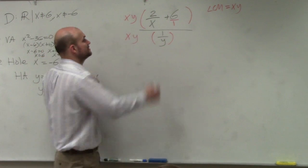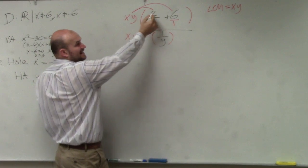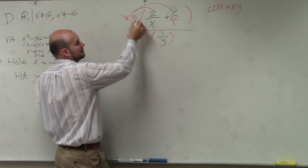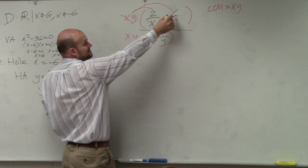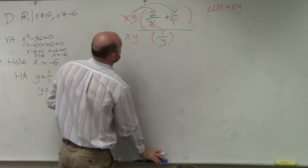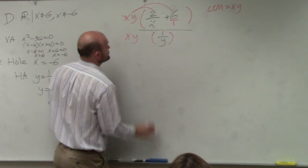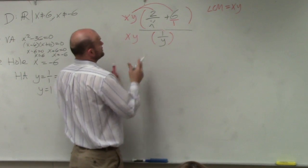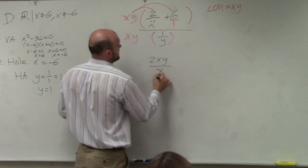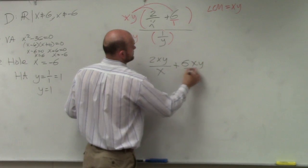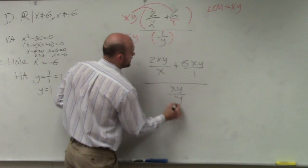But watch what happens. You have to apply a distributed property here. So what's xy times 2 over x? The x's divide out, right? What's xy times 6? Well, actually, let me—I don't want to confuse you. Let's do it. Let's actually distribute this. So by doing distributed property, I get 2xy divided by x plus 6xy divided by 1 all over xy divided by y. You guys see how I did distributed property there?